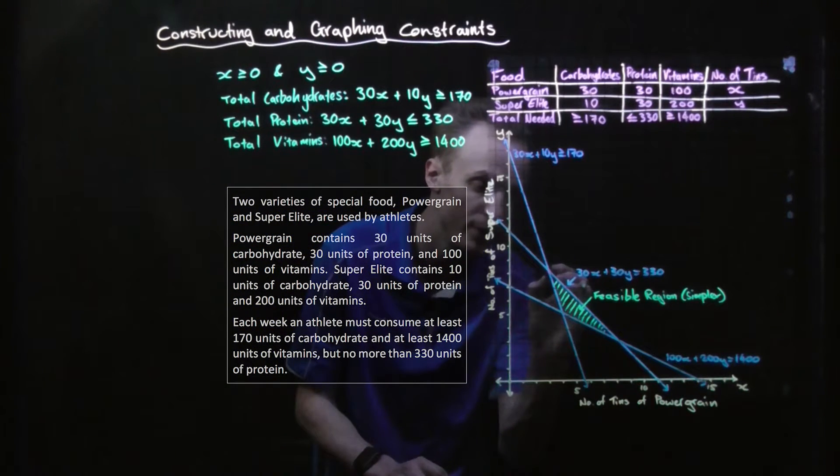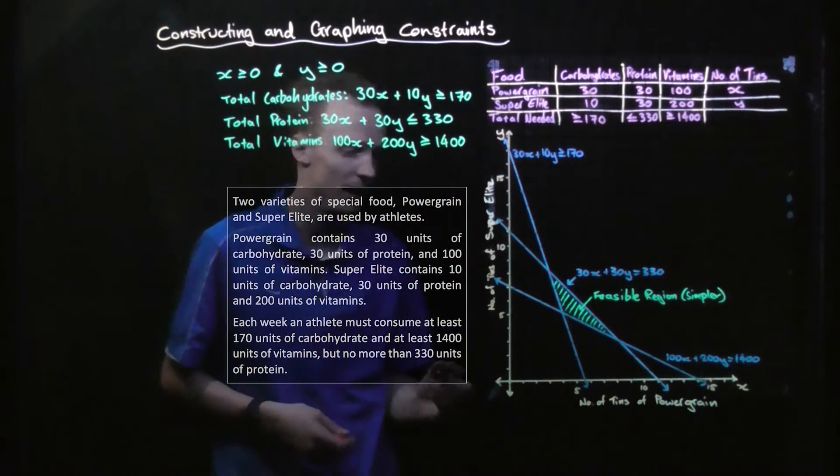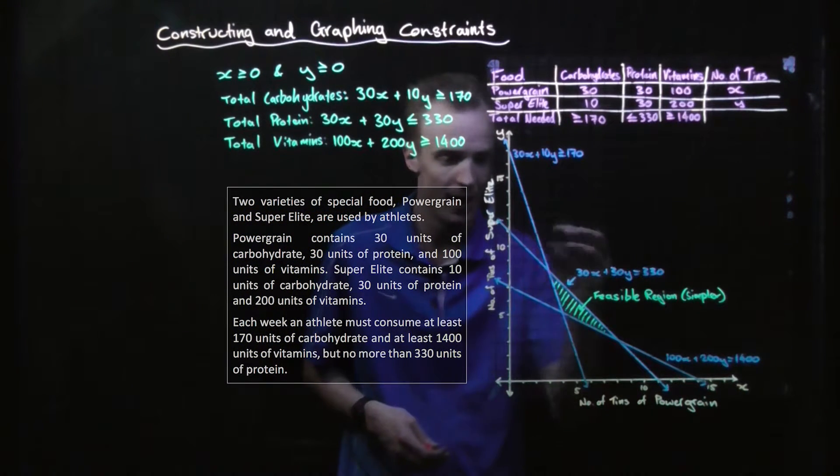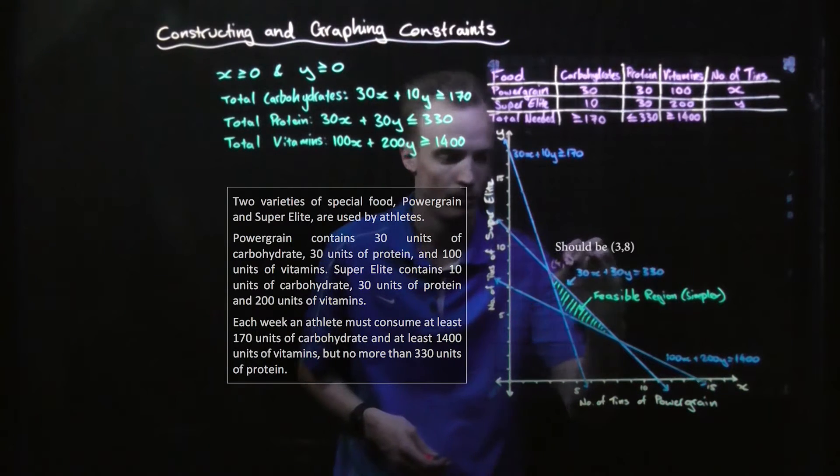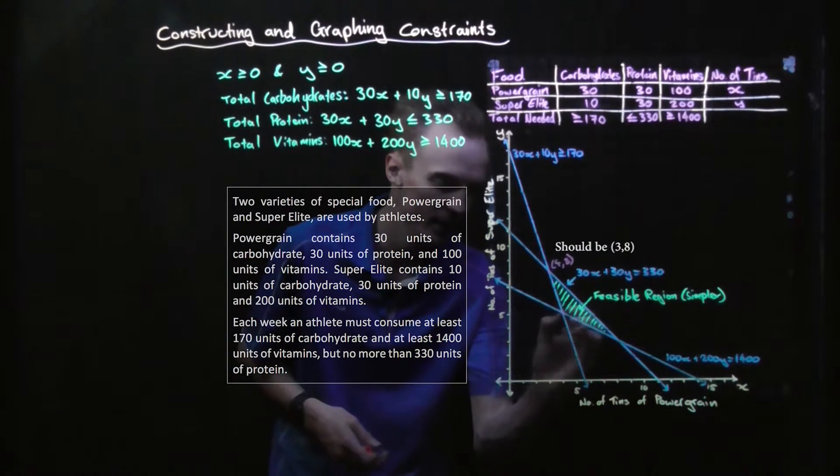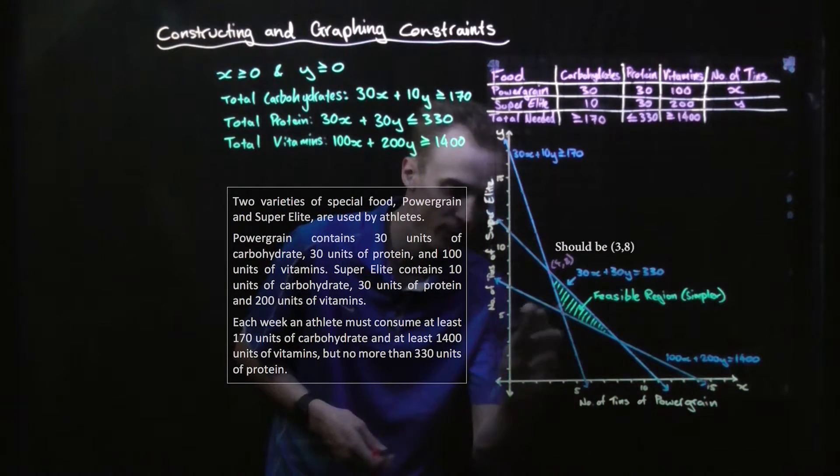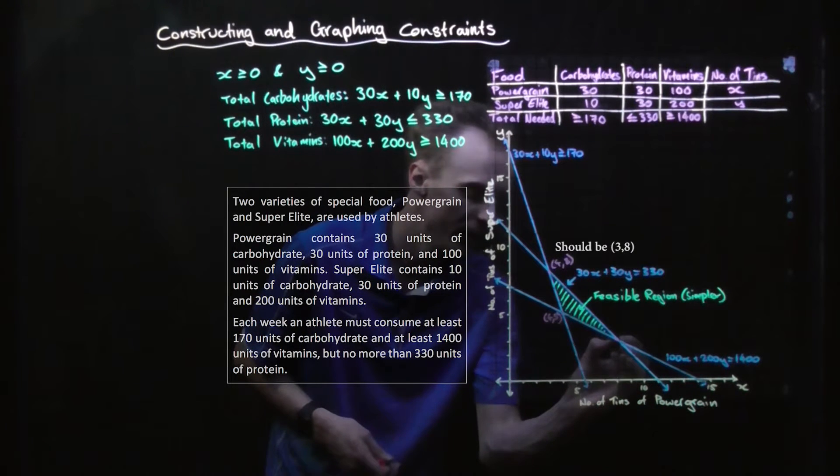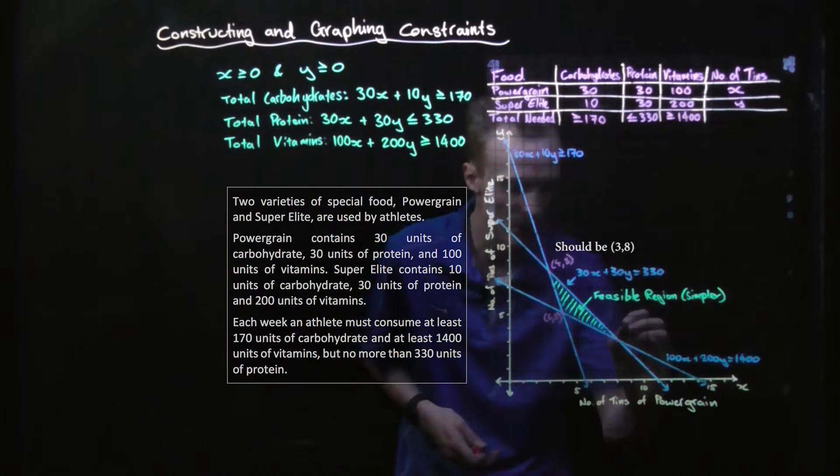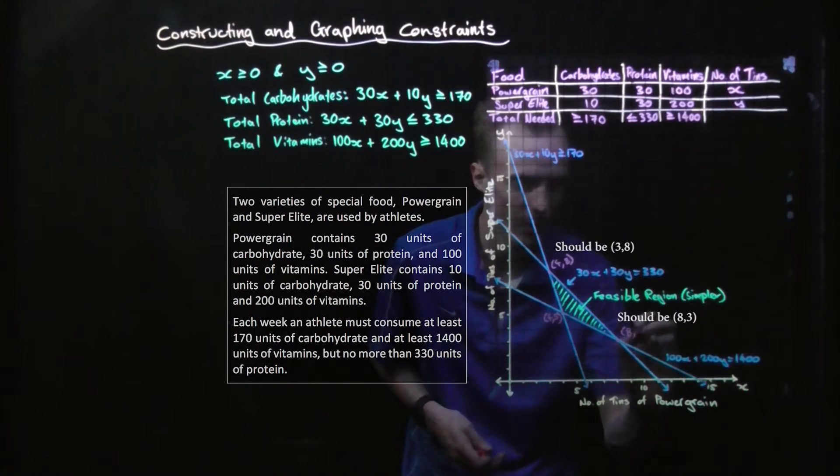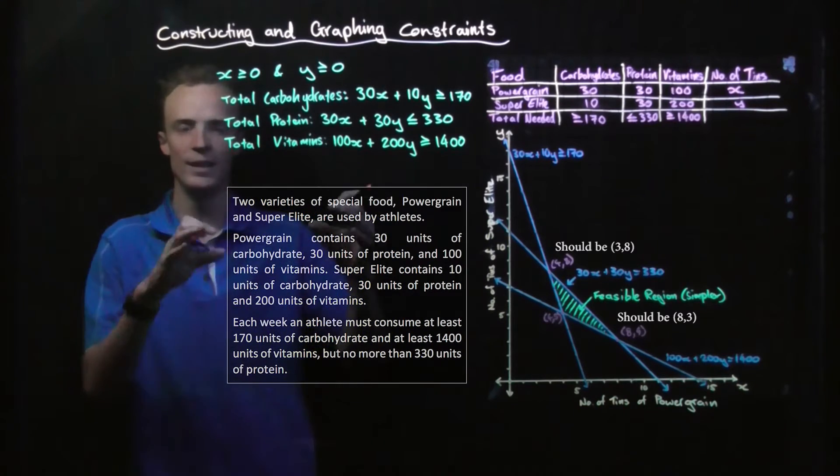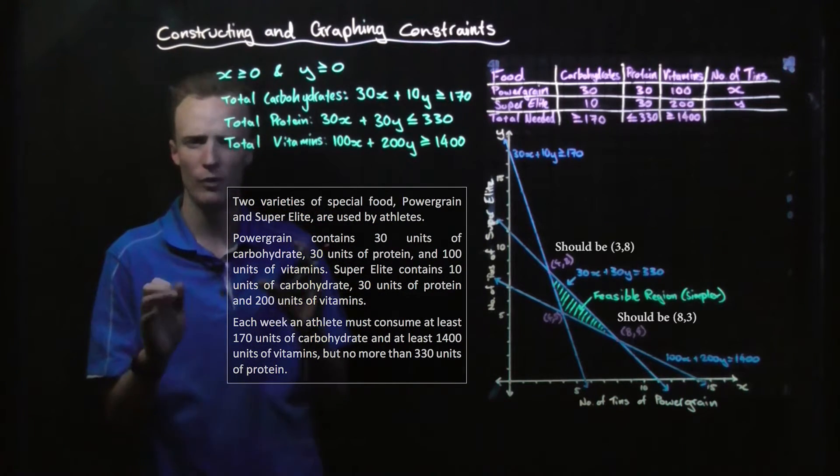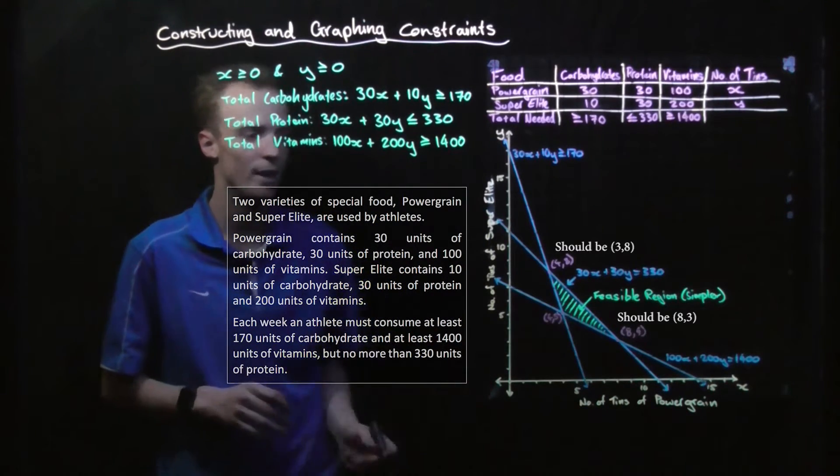So one exists, for example, at this vertex here, which would be 4 cans and 8 cans. It also exists at this vertex, where it would be 4 cans and 5 cans, and this third vertex here, which is 8 cans and 4 cans. And it can also exist within the feasible region. So I'm going to find them all within this feasible region.